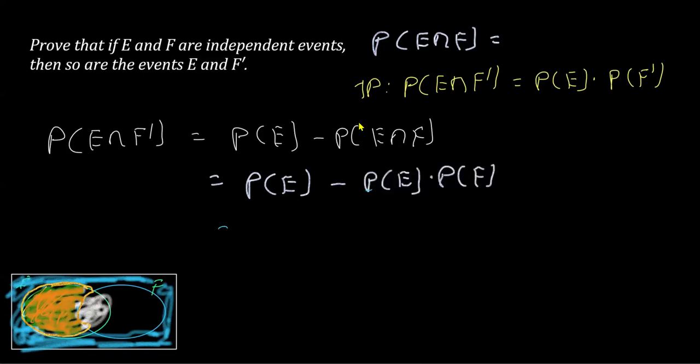Next, I'm going to take P(E) as common. You see the event P(E) is common. If I take out P(E) as common, what you are going to get here inside is 1 for this and minus P(F) for this.